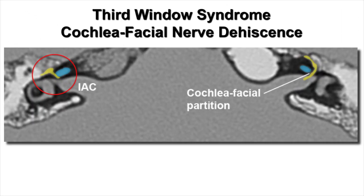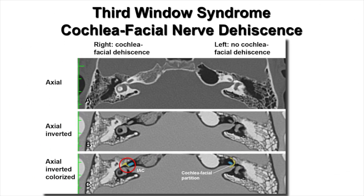Before showing traditional temporal bone CT images, a colorized inverted version is presented. By convention, the right ear appears on the left of the screen and the left ear on the right. The cochlea is colored blue and the facial nerve yellow. Within the red circle on the right temporal bone, there is no bony separation between the cochlea and facial nerve — demonstrating the cochlea facial nerve dehiscence. The left side shows a bony cochlea facial partition. The figure panels show the traditional axial CT image, an inverted version that more easily demonstrates the relationship, and the colorized version.